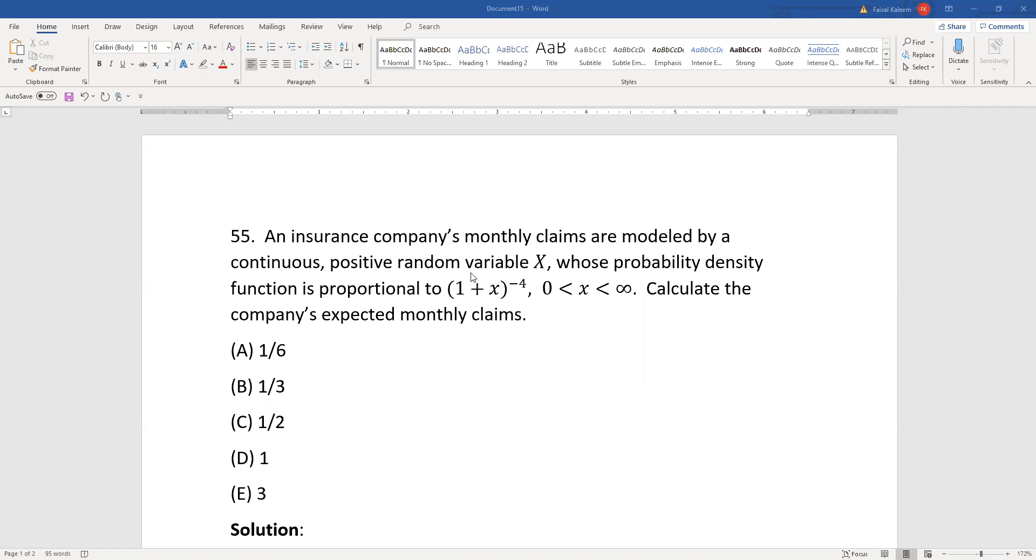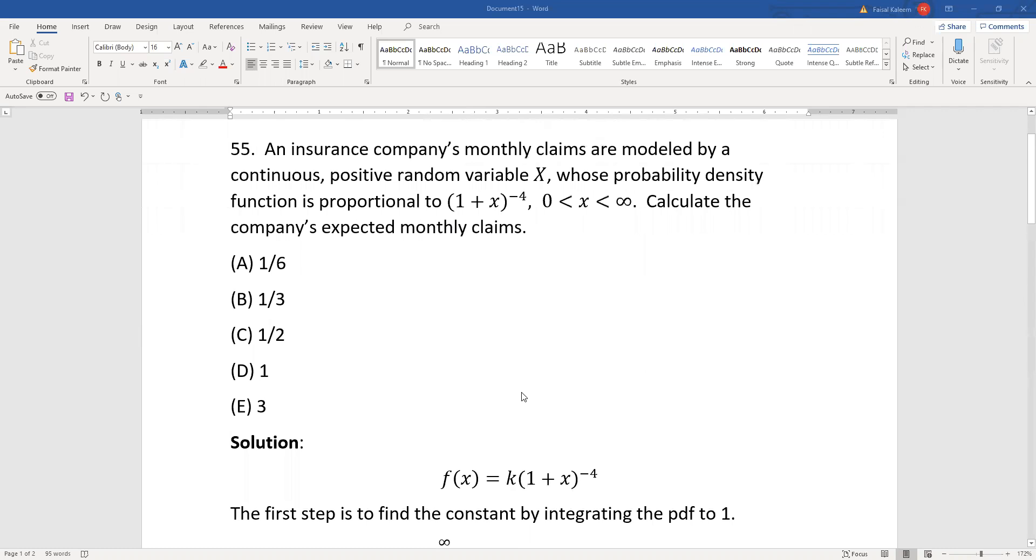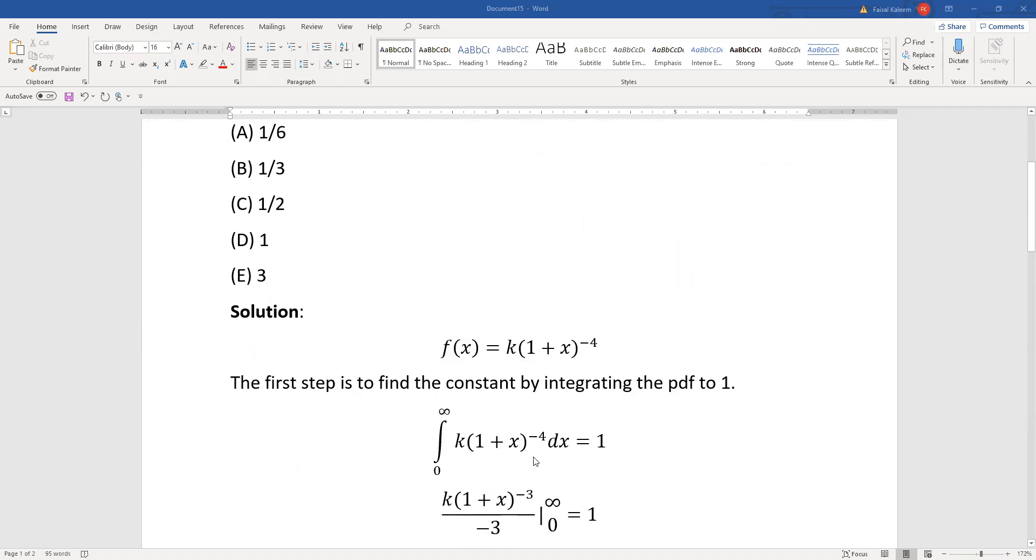So the PDF is proportional to this, which means it's equal to K times this. The first step is to find K by integrating the PDF to one.